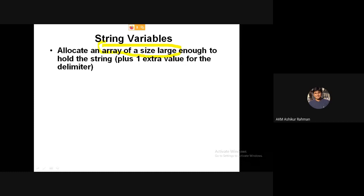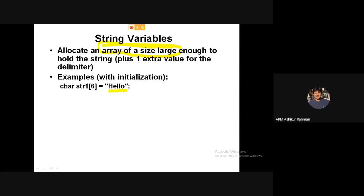Obviously it has to be large enough to store the word or string plus one extra place to store the null. Correct. 1, 6, equal to hello. Hello, how to do this: 1, 2, 3, 4, 5, 8, 6 — a size-6 array.